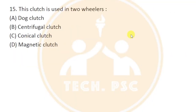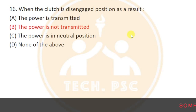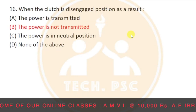This clutch is used in two-wheelers — it is a centrifugal clutch. When the clutch is in the disengaged position, power is in neutral — none of the above options apply — power is not transmitted. When the clutch is disengaged, power is not transmitted to the drivetrain.